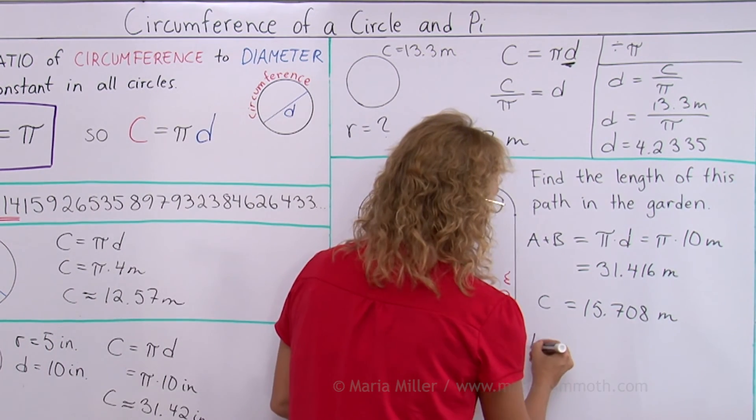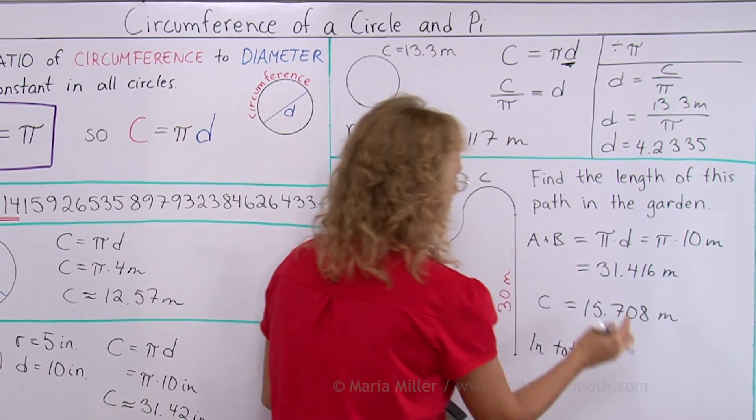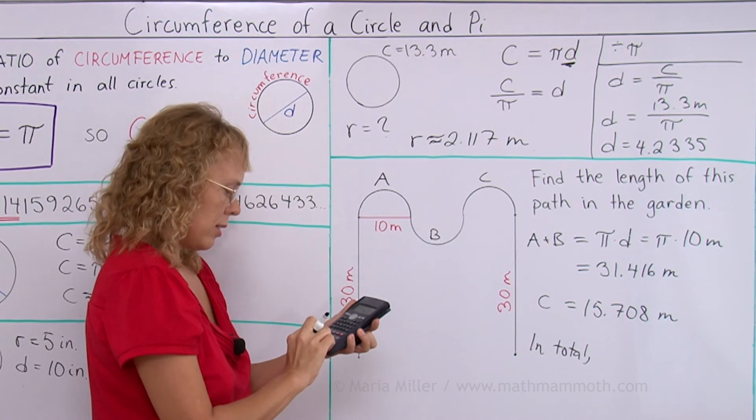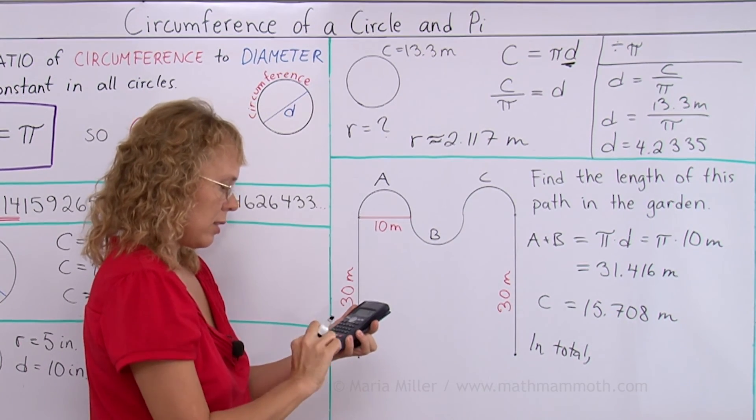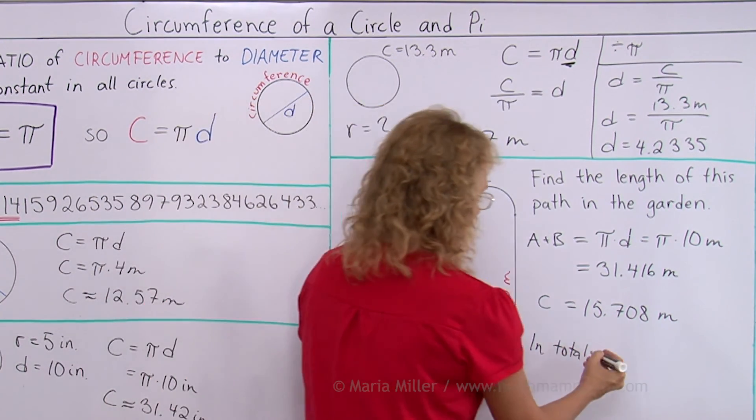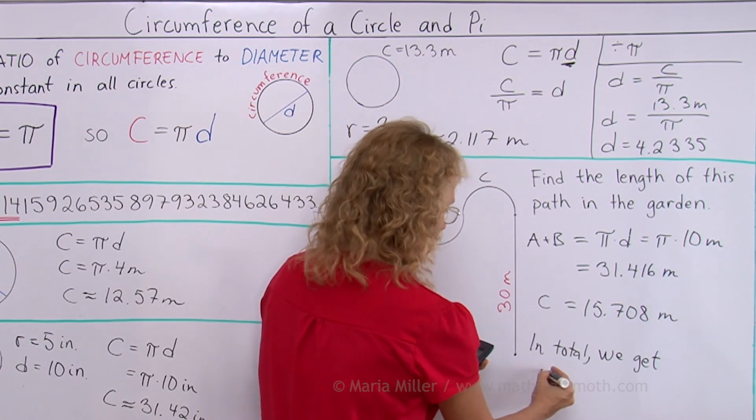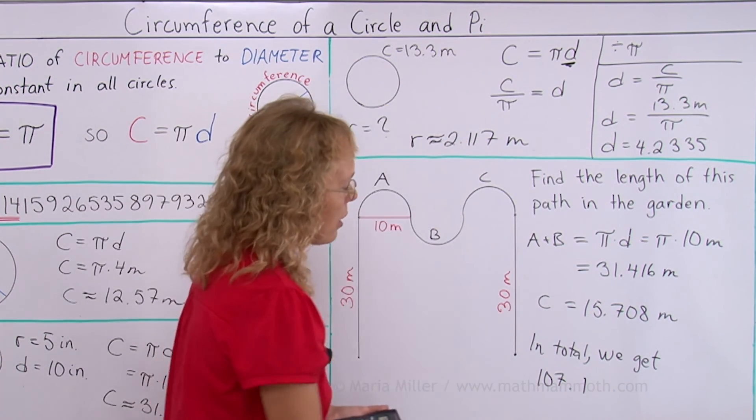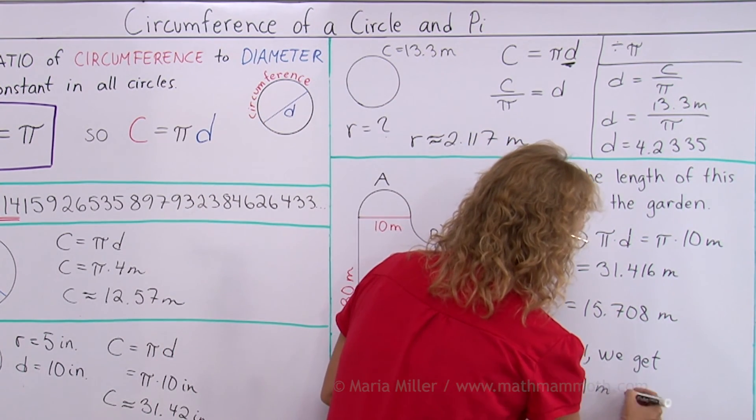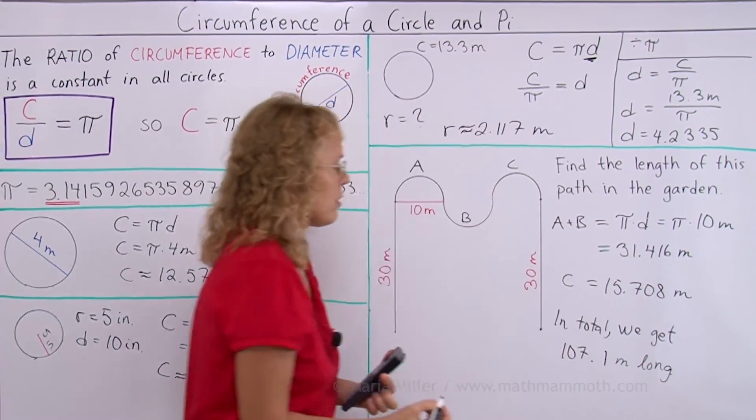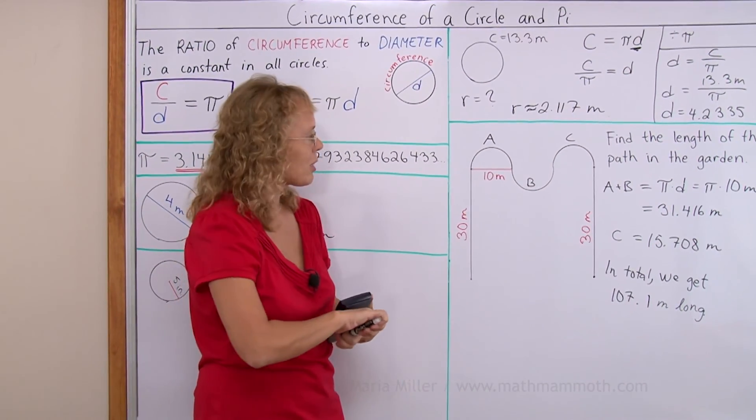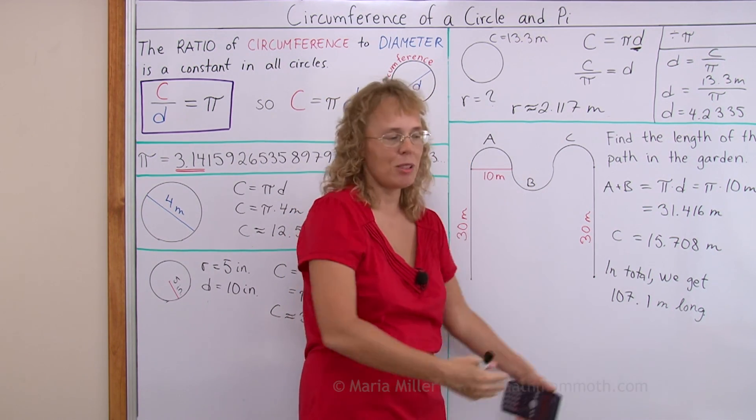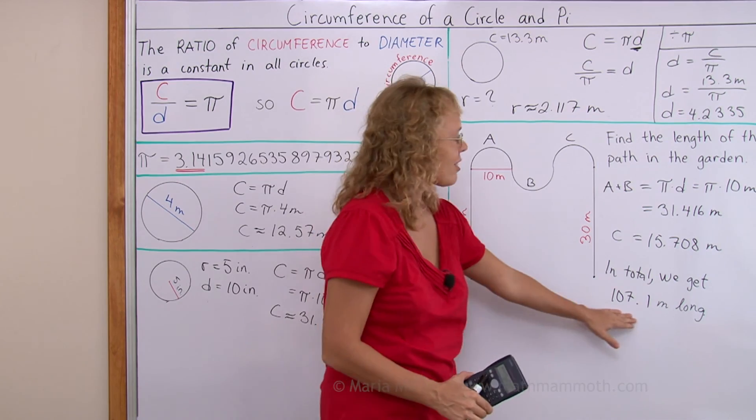So in total, just add all these paths together. This number, this number, 30 and 30. So we get in total the path is 107.1 meters long. You might even want to round it to whole meters, because in this kind of application, I don't know if those centimeters, 10 centimeters really matters. About 107 meters long.